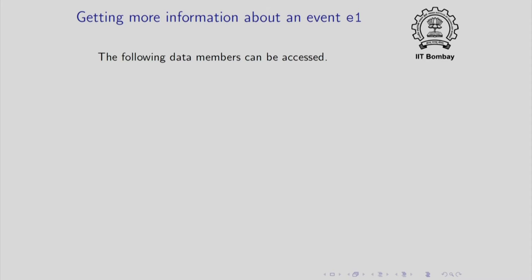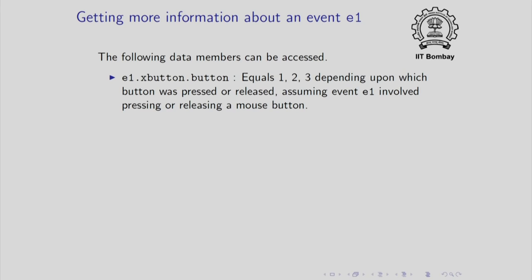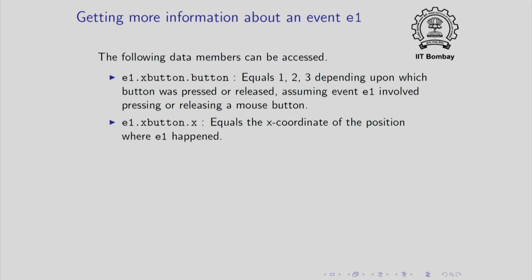To get more information about an event, you can access its data members. For example, event.xbutton.button equals 1, 2, or 3 depending upon which button was pressed or released — 1 for the left button, 2 for the middle button, and 3 for the right button. You can also get the coordinate where the pressing or releasing happened: event.xbutton.x gives the x coordinate and event.xbutton.y gives the y coordinate of where the event happened.